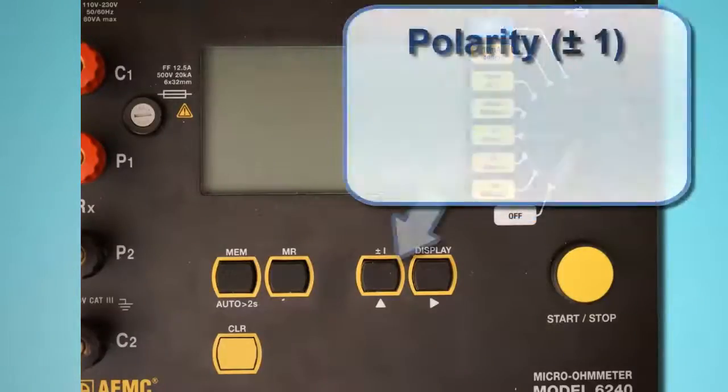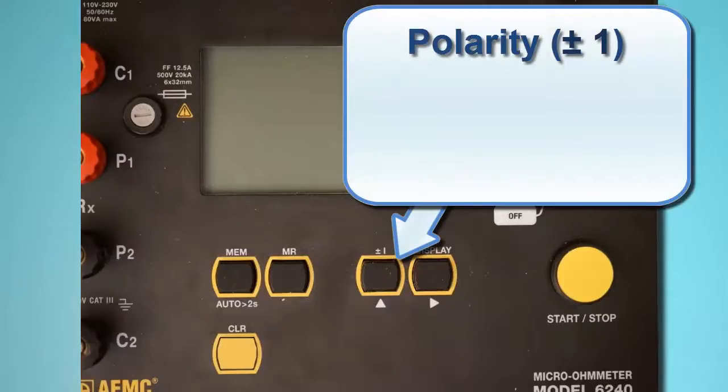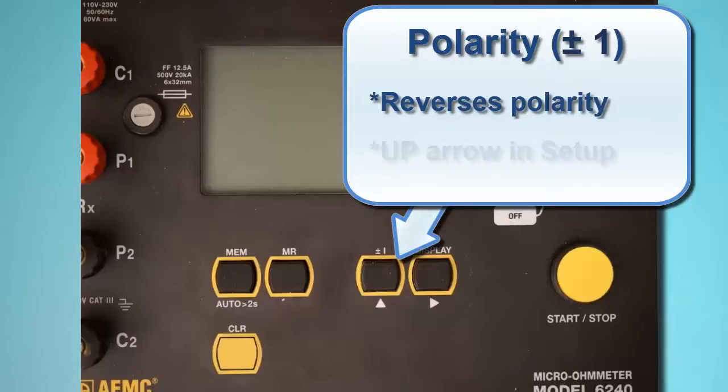The next button to the right is the Polarity button, labeled ±1. This reverses the polarity of the test current and displays the average of the two polarity measurements. This is useful for minimizing the effects of stray DC currents when measuring very low resistances. This button also serves as the up arrow in user configurable screens, such as those displayed in setup mode.